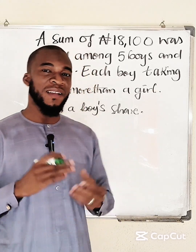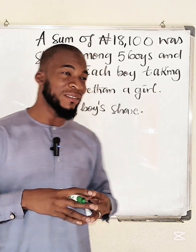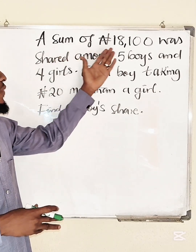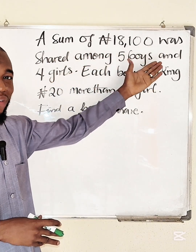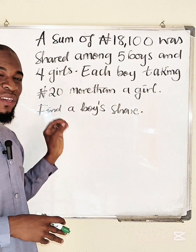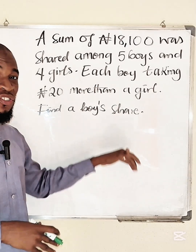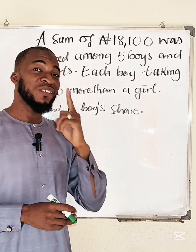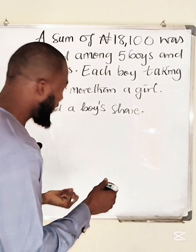Here is an interesting question for JSS2 students. The question reads: the sum of ₦1800 was shared among five boys and four girls, each boy taking ₦20 more than a girl. We are asked to find the boys' share — meaning we should find the share of each boy.